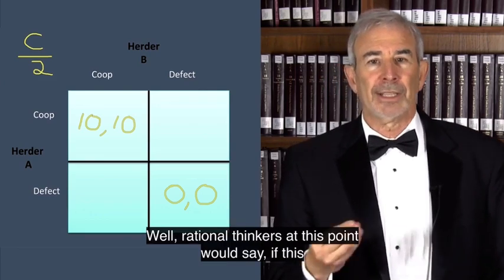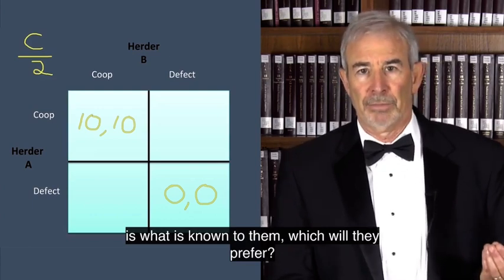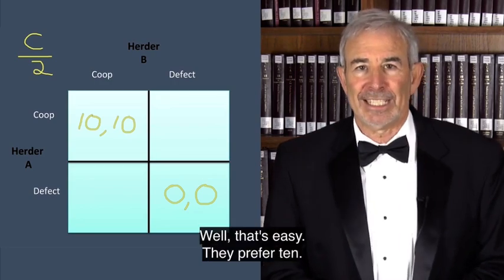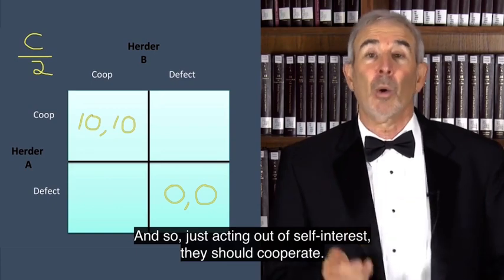Well, rational thinkers at this point would say, if this is what is known to them, which would they prefer? 10 or zero? Well, that's easy. They prefer 10. And so, just acting out of self-interest, they should cooperate.